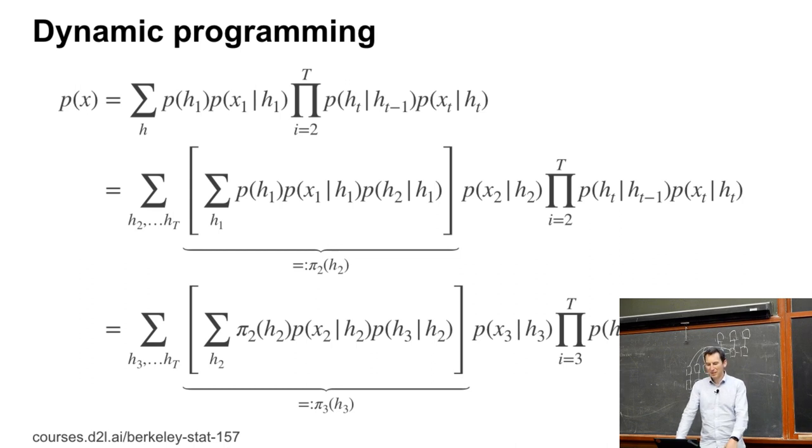The smart thing is dynamic programming. So the first thing we can do is we can pull out every term involving H1. Nothing has happened yet if I go from the first line to the second line. But I'm also going to pull out the summation over H1 directly. So I have sum over H1, P of H1, P of X1 given H1 times P of H2 given H1. And if I sum over H1, then I just get some P of H2. So now I have something that looks very similar to what we started out with, but I got rid of the summation over H1.